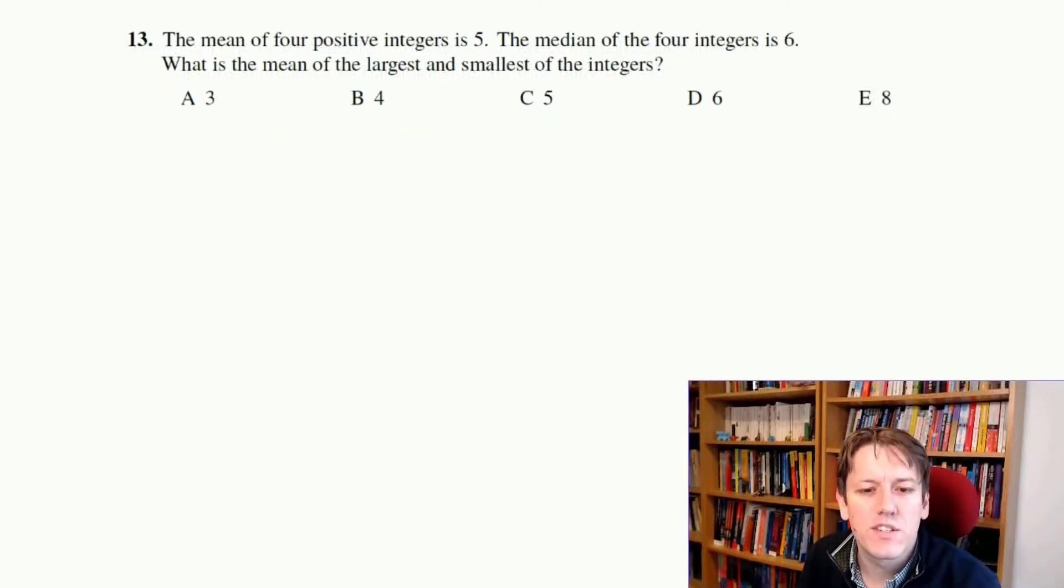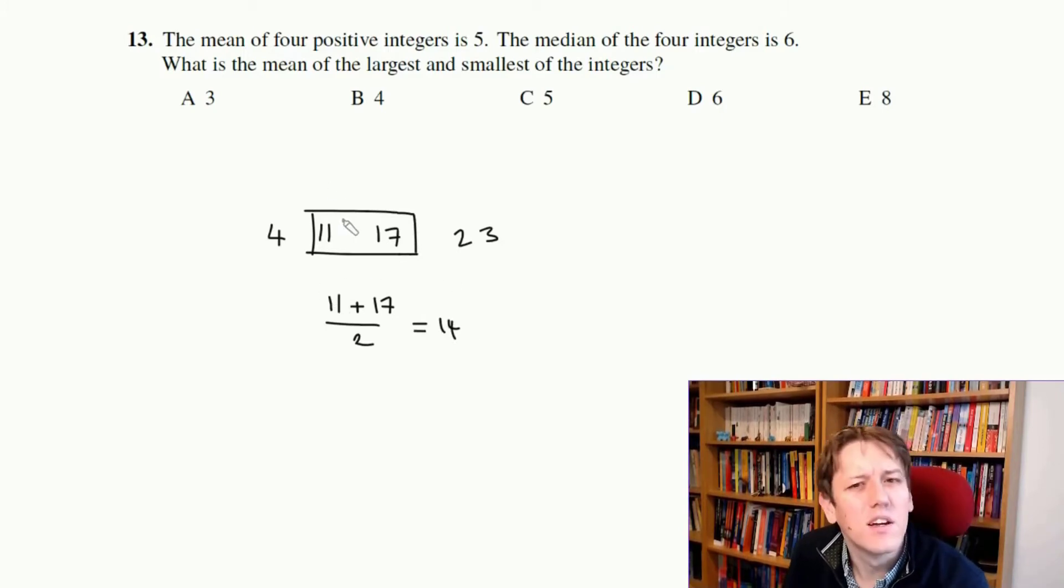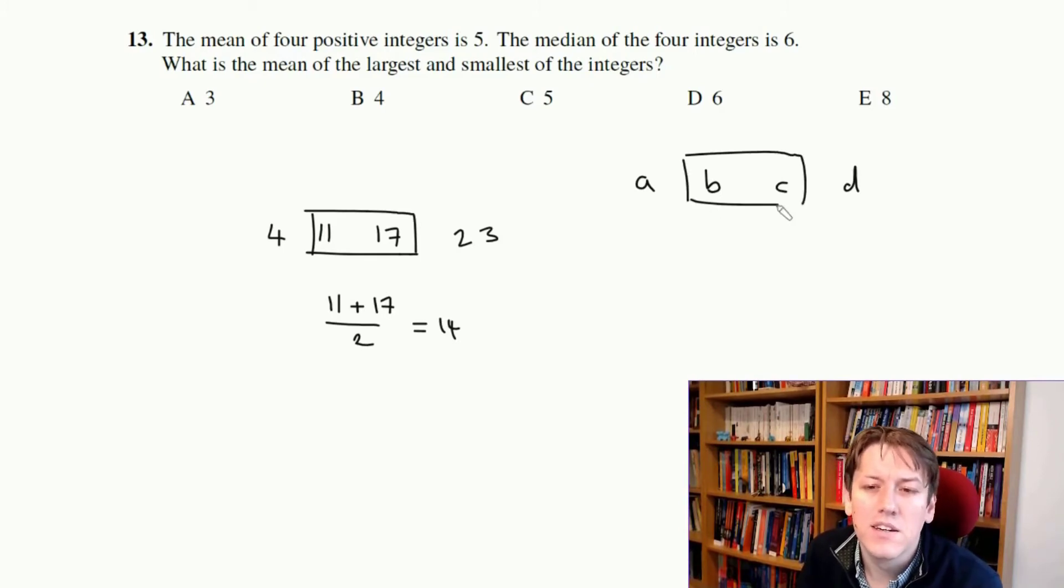Here we're told the mean of 4 positive integers is 5, and the median of the integers is 6. And we want to know what's the mean of the largest and the smallest of the integers. Now, when you've got a list of 4 numbers, these aren't the actual numbers, but let's say it was 4, 11, 17, and 23. The median of them, you take the average of the middle 2 because there is no middle value, right? So I have to work out 11 plus 17 over 2 here and get that 14 is the median. So actually, the median of the integers is the mean of the middle 2 numbers. So if I've got A, B, C, and D, the median is the mean of B and C. So that means that B and C must add together to give 12, and then 12 divided by 2 would be 6.